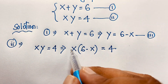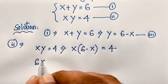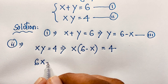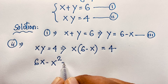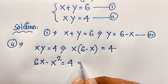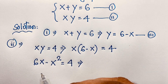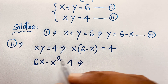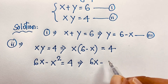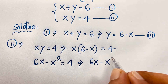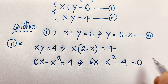Expanding: 6 times x is 6x, and x times x is x squared. So we have 6x minus x squared equals 4. If I move this 4 to this side, it will be negative 4. So it will be 6x minus x squared minus 4 is equal to 0.